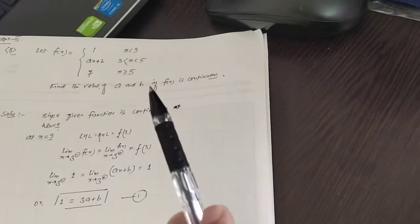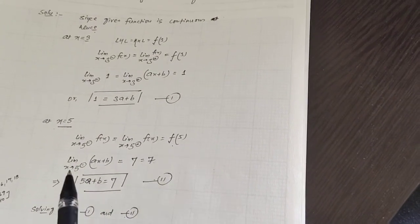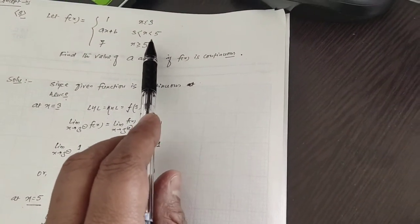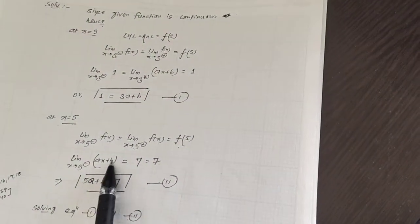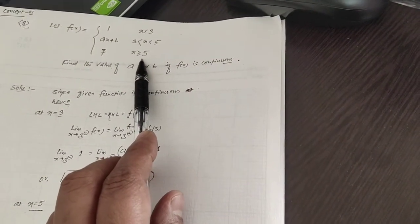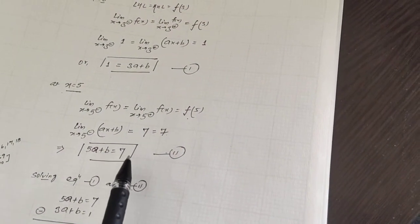Now check the continuity at x equals to 5. The left-hand limit, right-hand limit, and the value of f(5) must all be the same. When x tends to 5 minus, we take the ax + b function; when x is greater than or equal to 5, the function equals 7. So 5a plus b equals 7 — this is equation 2. Solving these two equations simultaneously, we can find the values of a and b. Thank you.